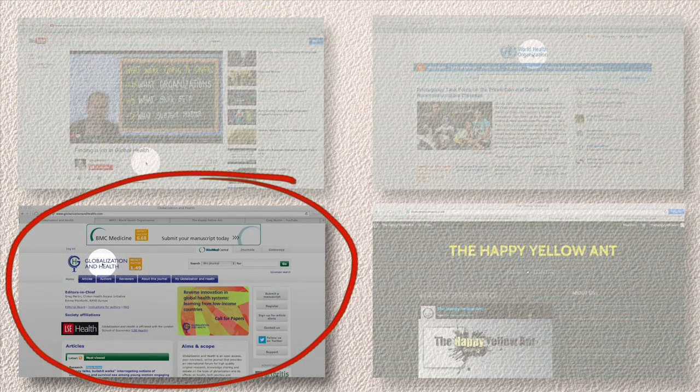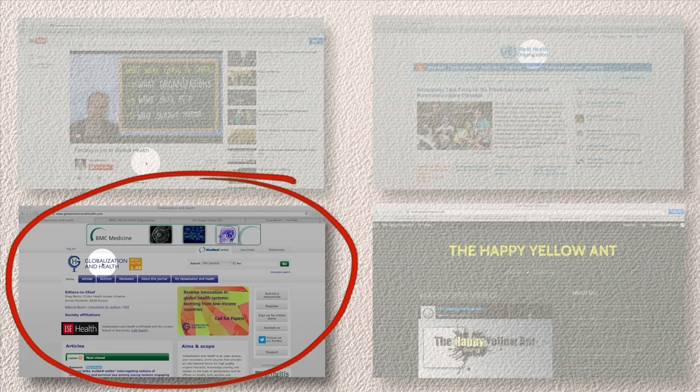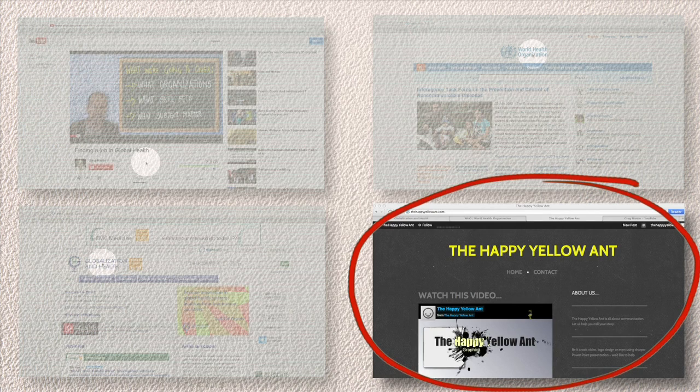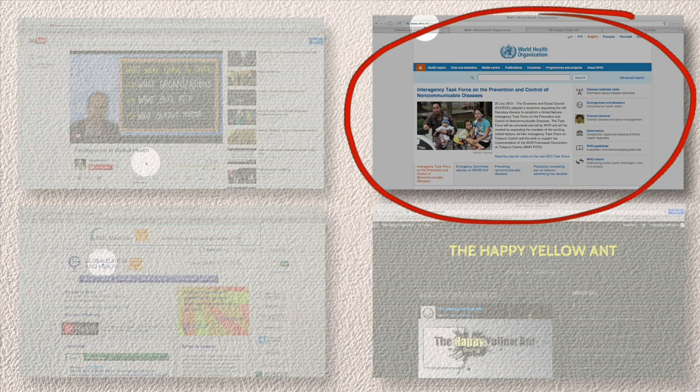You can get more information on this and other topics at globalizationandhealth.com. Globalization and Health is an open access peer-reviewed online journal. And of course thanks very much to the happyyellowant.com for providing the graphics. These facts and figures are available at the World Health Organization's webpage www.who.int.